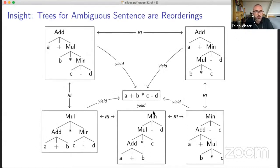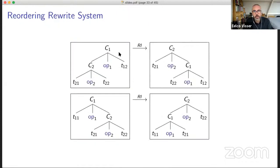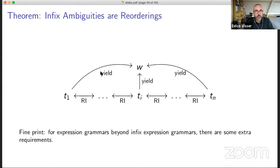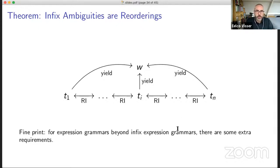Ambiguous trees for an ambiguous sentence are related by reordering — you can rewrite these trees into each other. The rewrite rules are simple: they're reassociation rules. Looking only at infix rules, if we have two rules that are left associative, you can make them right associative or the other way around. That's it — those are reorderings in infix grammars. And we have a theorem that says if we have a sentence in a grammar with infix expressions, then all the trees for that sentence are related by reorderings and can be rewritten into each other.